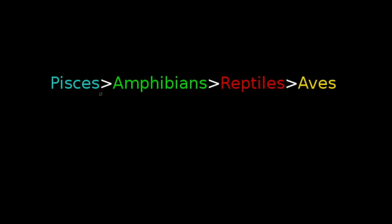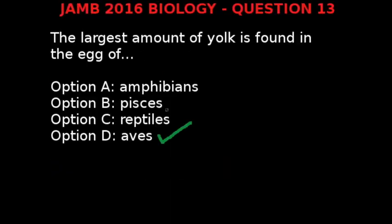Following this evolutionary trend, Aves are the highest in the organization of life considered here, and the size of the egg increases as the level in the organization of life increases. Therefore our correct answer is option D, Aves.